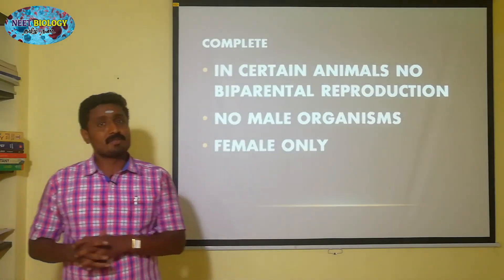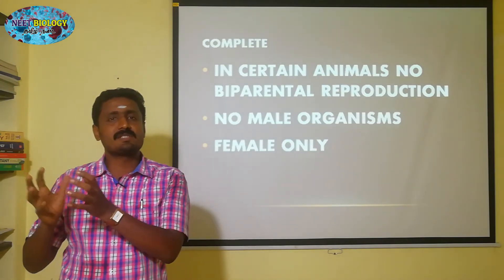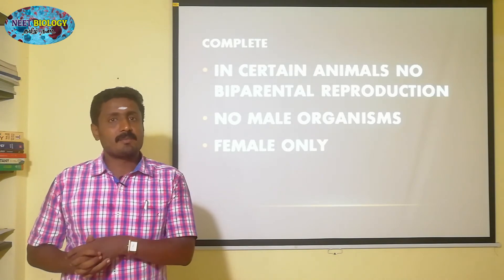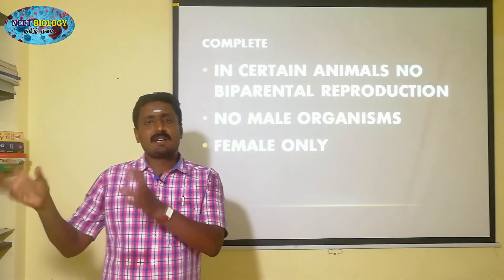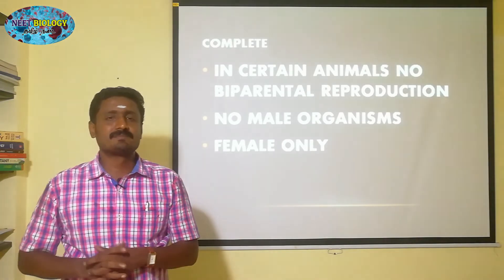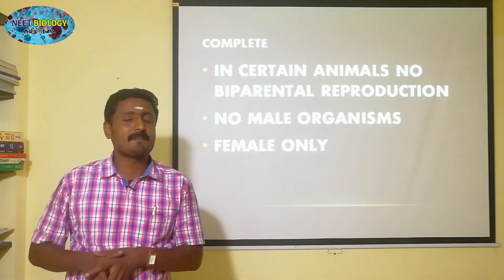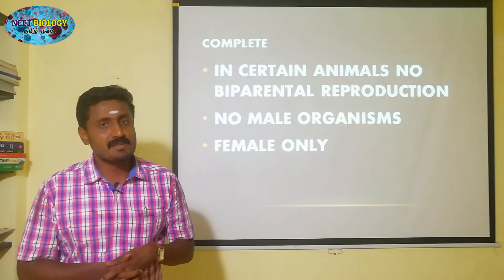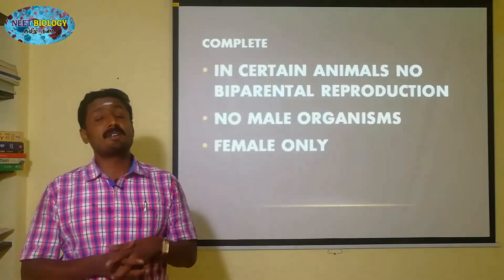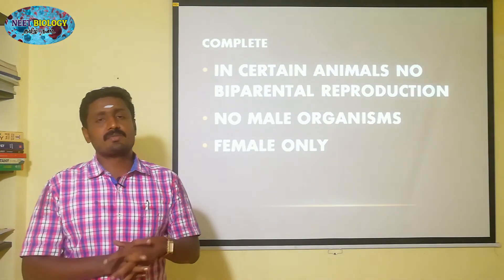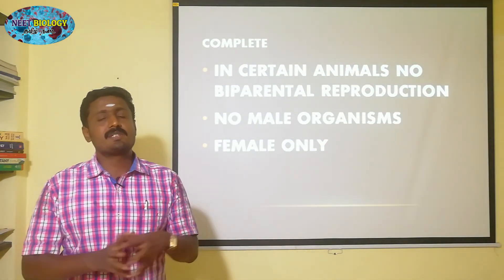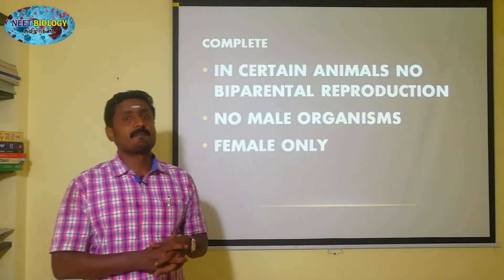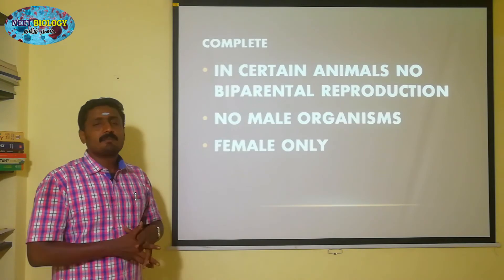There are two types. Parthenogenesis is a reproductive method. Sexual reproduction is also a reproductive method. The two methods together make incomplete parthenogenesis. Parthenogenesis is incomplete when sexual reproduction is also used. If one organism is dependent only on parthenogenesis for its reproduction — no asexual reproduction, no sexual reproduction, no vegetative, no regeneration, nothing else — only parthenogenesis — that is called complete parthenogenesis.